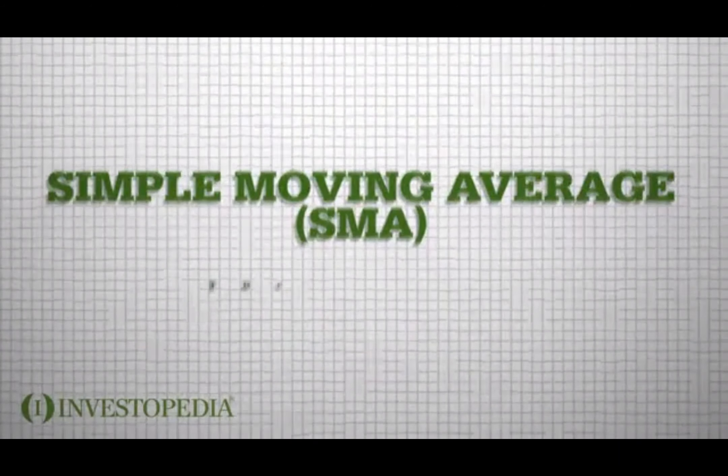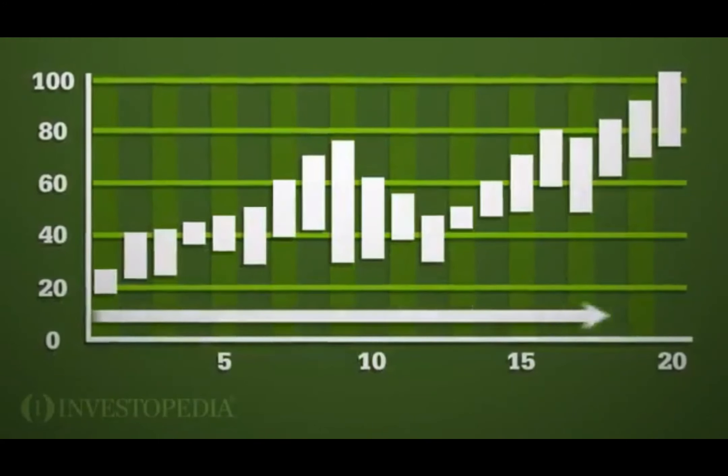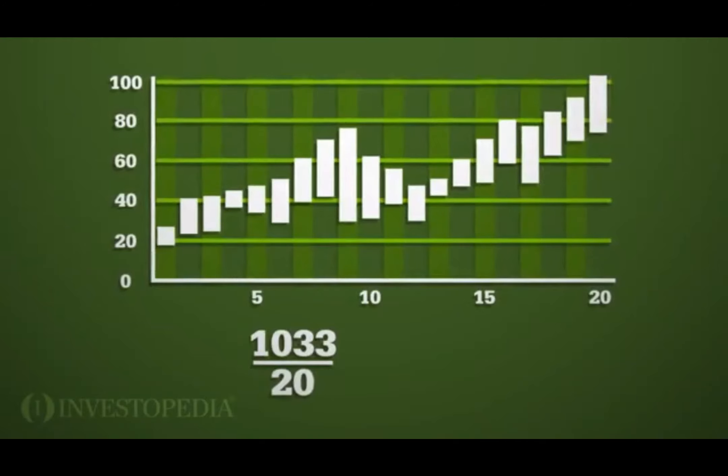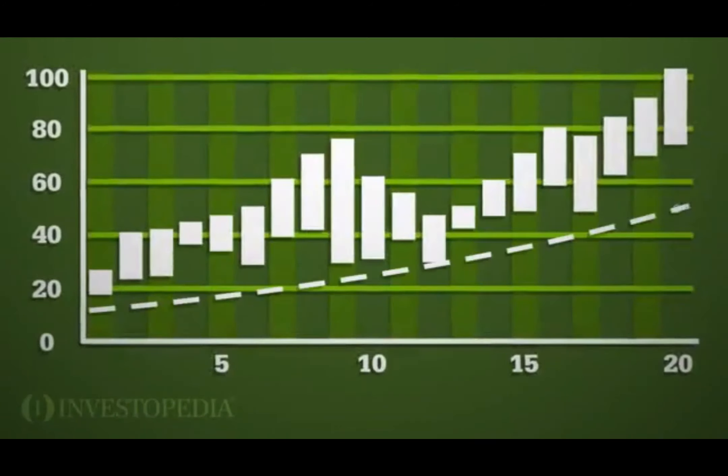The simple moving average is the mean of the data points. For example, if you were using a 20-day moving average on stocks, the price for each of the past 20 days would be added together and then divided by 20 to generate the moving average.